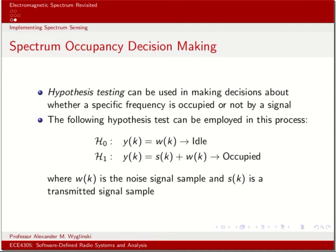The last important aspect of spectrum sensing is the decision-making process, for which we use hypothesis testing. There are two hypotheses: H0 means you have nothing but noise — your measurement Y(k) equals W(k), just noise samples. H1 means there's a signal embedded with the noise, meaning the spectrum is occupied. We use techniques from signal estimation and detection theory in conjunction with this framework to implement decision making for spectrum sensors: is that spectrum occupied or not? If it is occupied, we move on to another spectrum that is not. This is critical for any sort of automatic decision-making process for opportunistically taking advantage of spectrum.